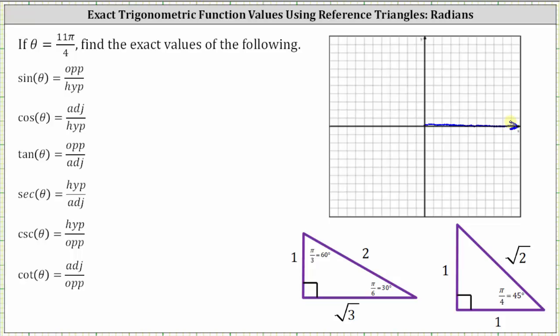Two pi radians is one complete rotation, and two pi radians is equal to eight fourths pi radians. So it'll be helpful to write 11 fourths pi radians as eight fourths pi radians plus three fourths pi radians. We'll make one complete rotation in the counterclockwise direction, which is two pi radians or eight fourths pi radians.